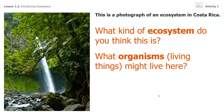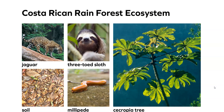This is a photograph of an ecosystem in Costa Rica. What kind of ecosystem do you think this is? What organisms — living things — might live here? This is a photo of the Costa Rican rainforest ecosystem, and here are some of the organisms that live there: the Cecropia tree, millipede, three-toed sloth, soil, and jaguars. I had a student once from Honduras who helped me learn how to say jaguar in Spanish — it's 'jaguare.' Can you say that? Jaguare. It's a beautiful word.